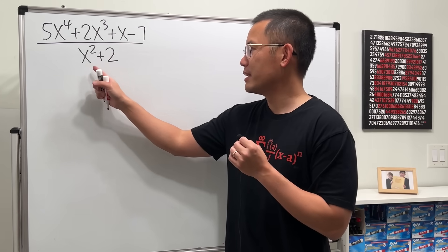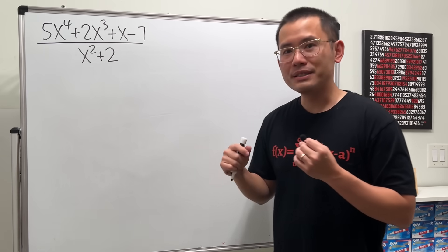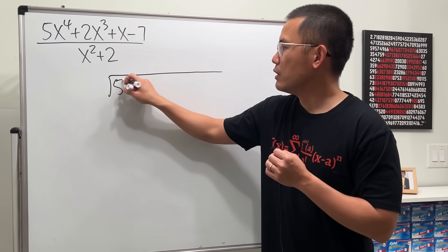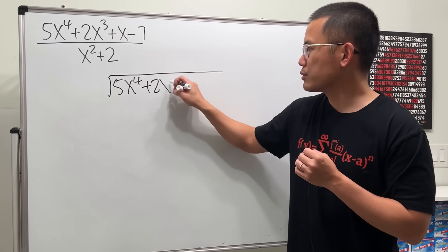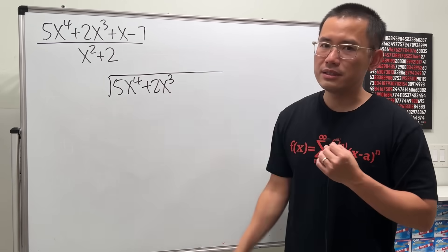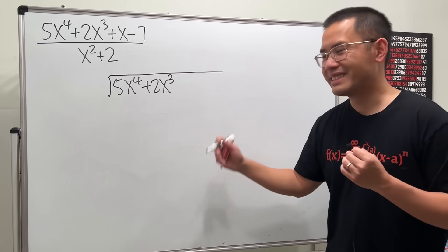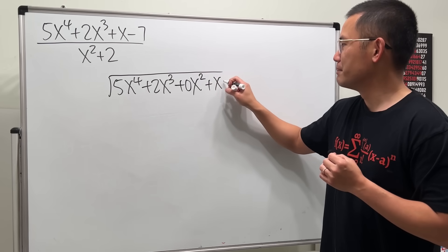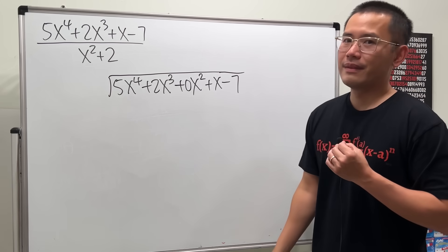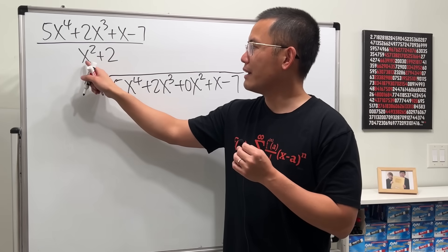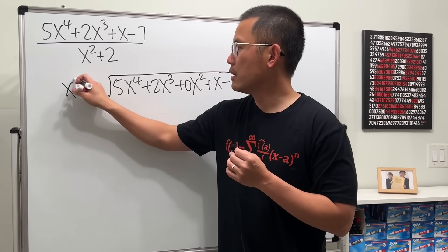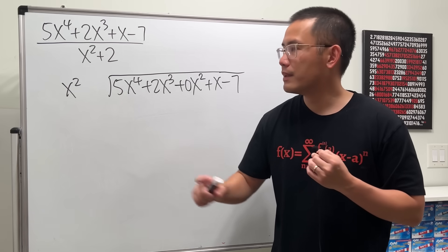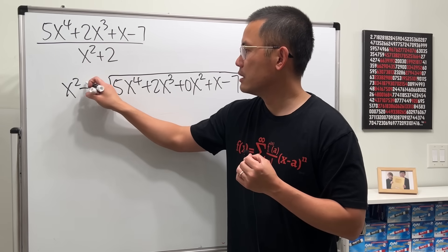For the fourth example, the denominator is a quadratic term, but the same idea applies. Put the top on the inside: 5x⁴ + 2x³, and since there's no x², write plus 0x², then plus x minus 7. On the outside we have x² + 2. Since the missing term is on the outside, you don't need to write plus 0x for the outside divisor.